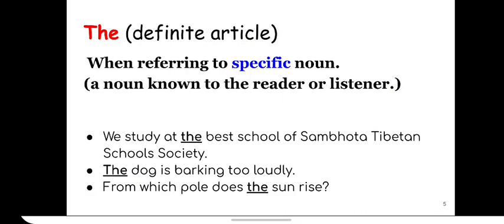And then the is used for a specific noun. Before specific noun, when you are definite about the noun. So we study at the best school of Sambhota Tibetan Schools Society. So the best will always be there because best is superlative. And before superlative, we use the as it is definite there. We know best can only be one or like a group class in total. Secondly, the dog is barking too loudly. So suppose there are a few dogs outside the school compound and then one of them is barking loudly. So you can say the dog is barking loudly. And we know which dog you're talking about. The one who is barking loudly, right?